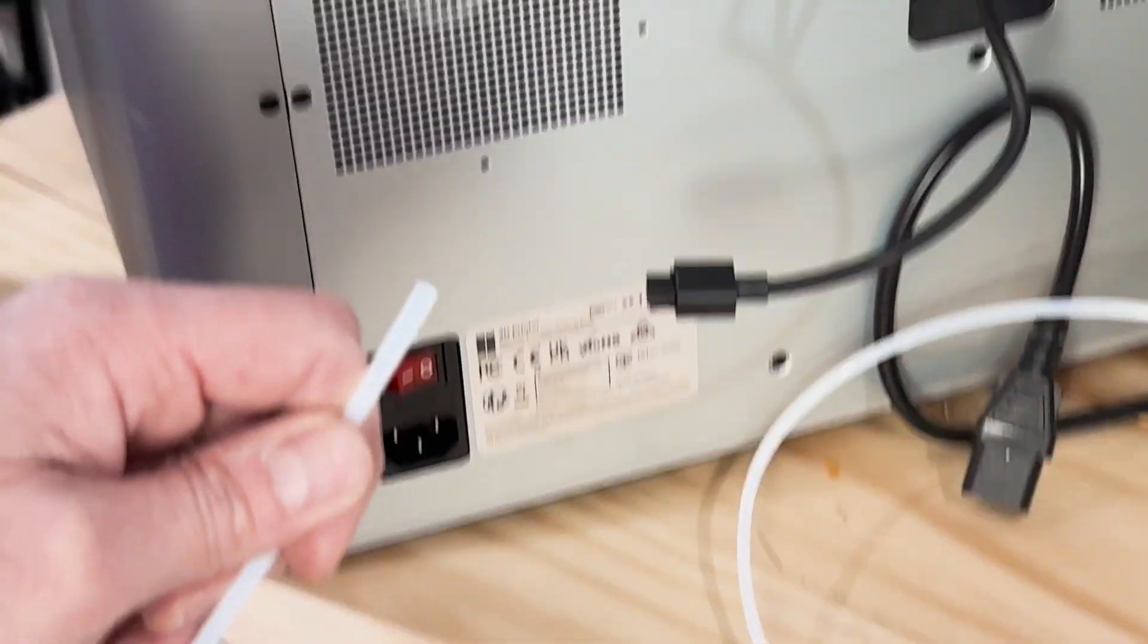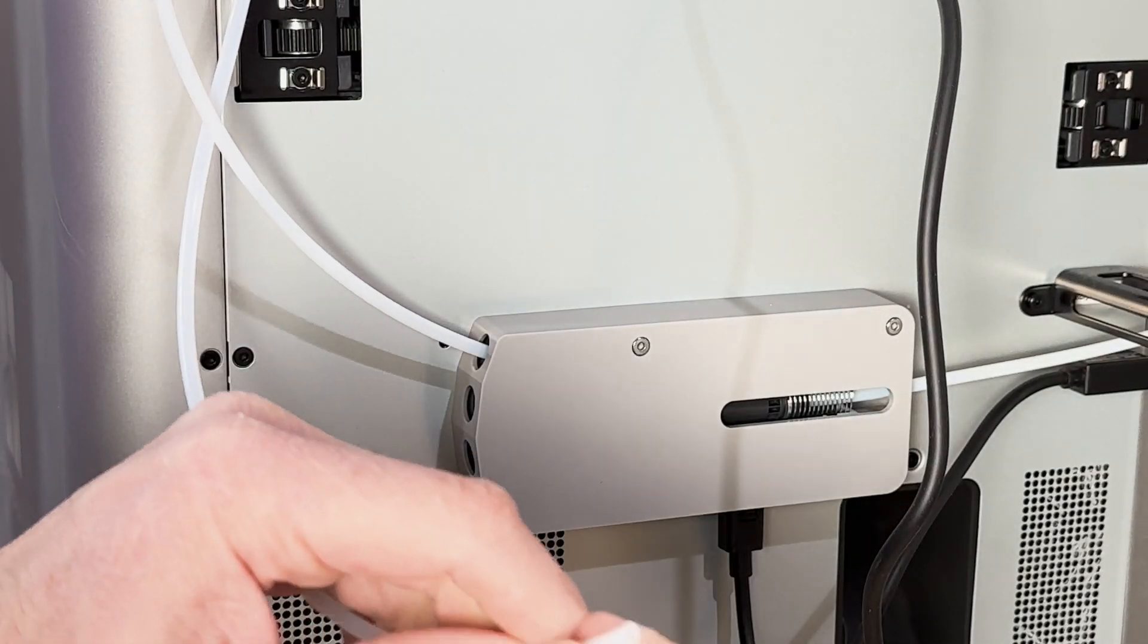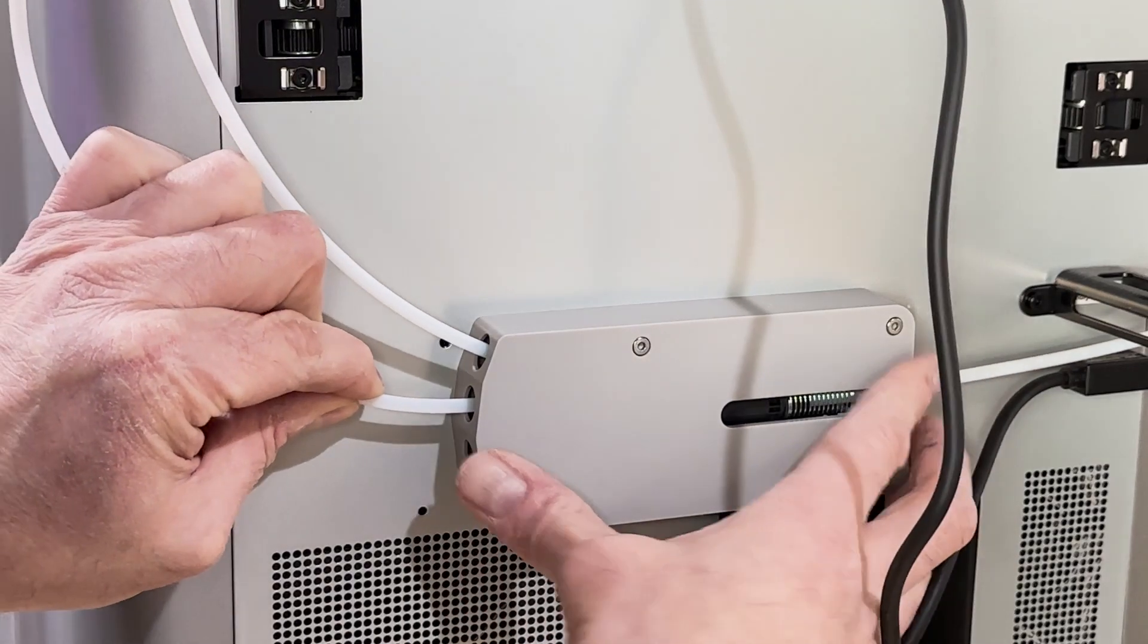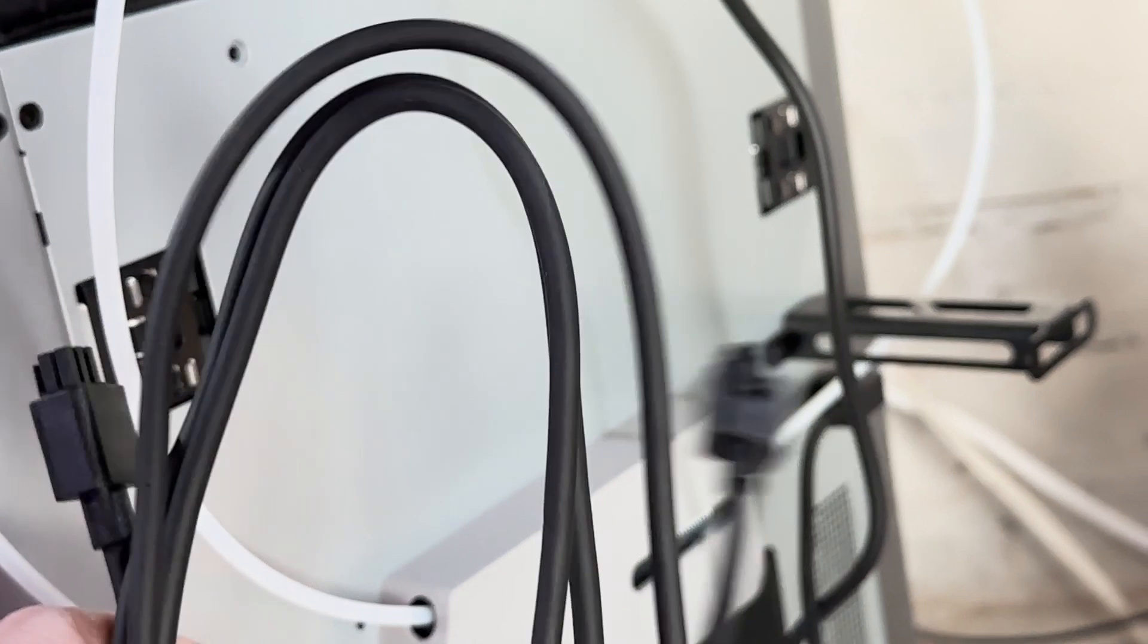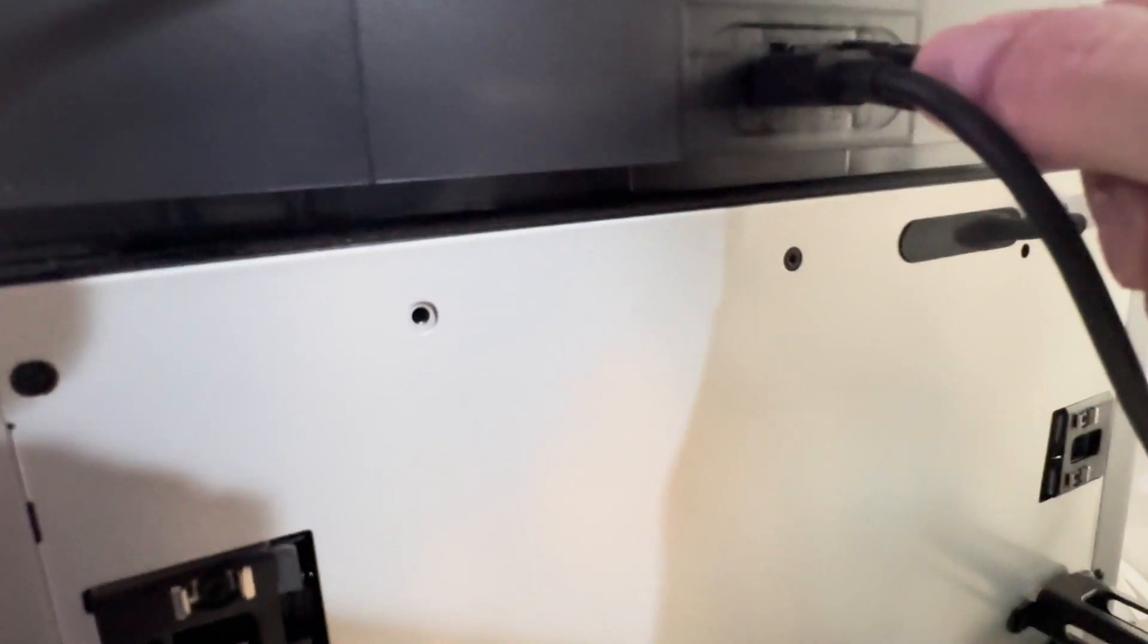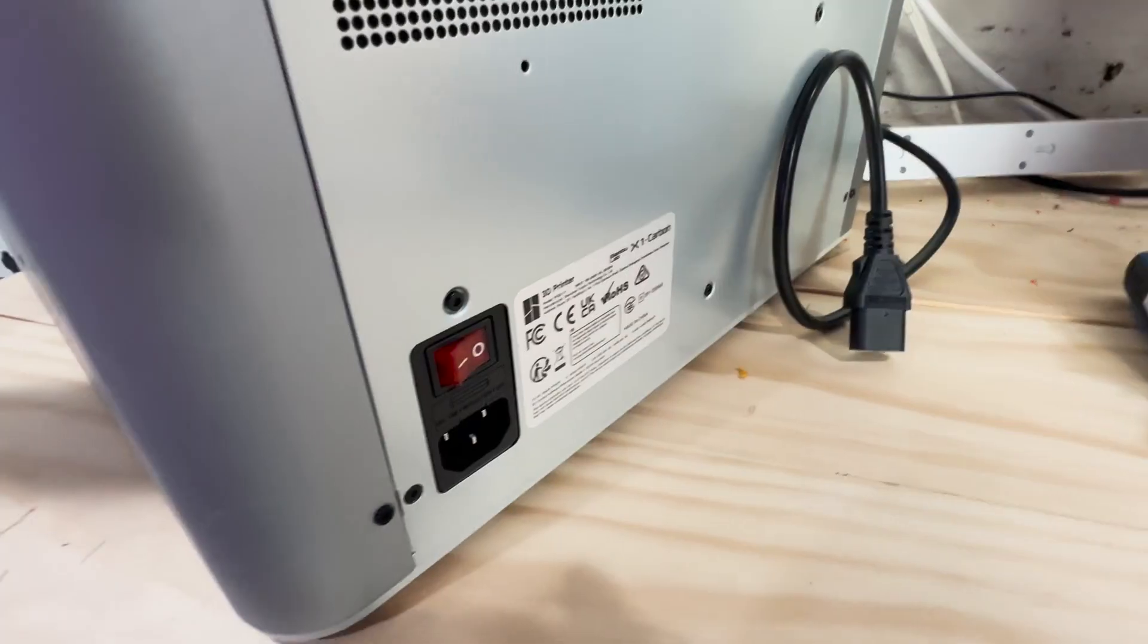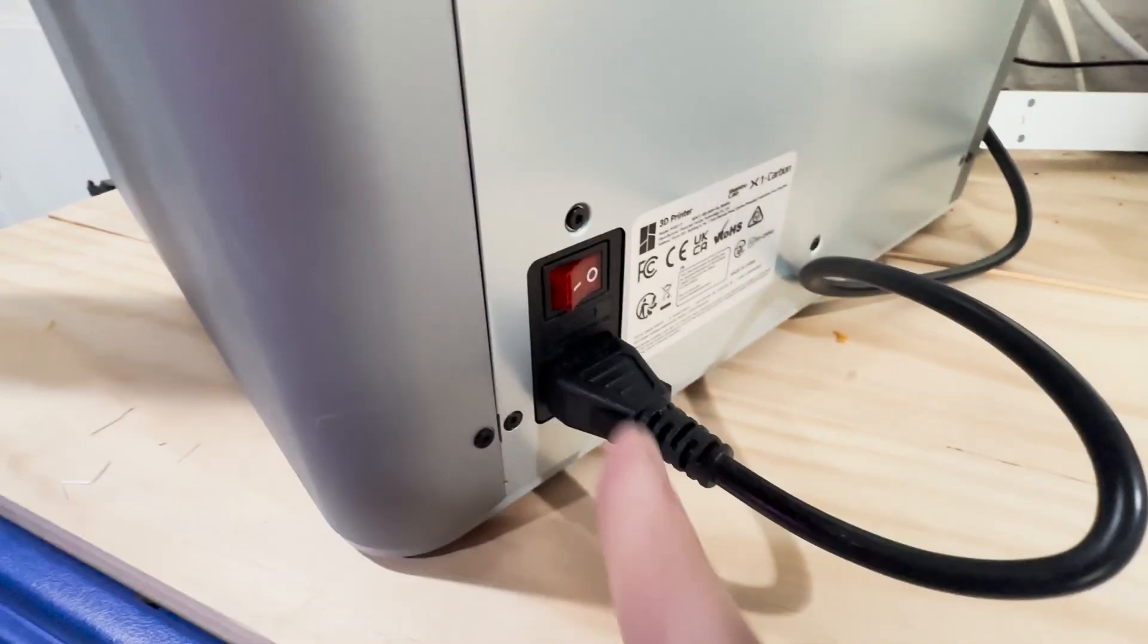So now let's get the AMS connected up. Now I have my tube. Look at it. Make sure it's straight. And it is. And now I'm going to stick it into the second AMS slot. Now I'm going to take one of the six-pin cables that came with the AMS hub. I'm going to plug it into the first AMS. And then I'm going to run it up to my second AMS. So now we're going to plug this back in, and we're going to turn our machine on.